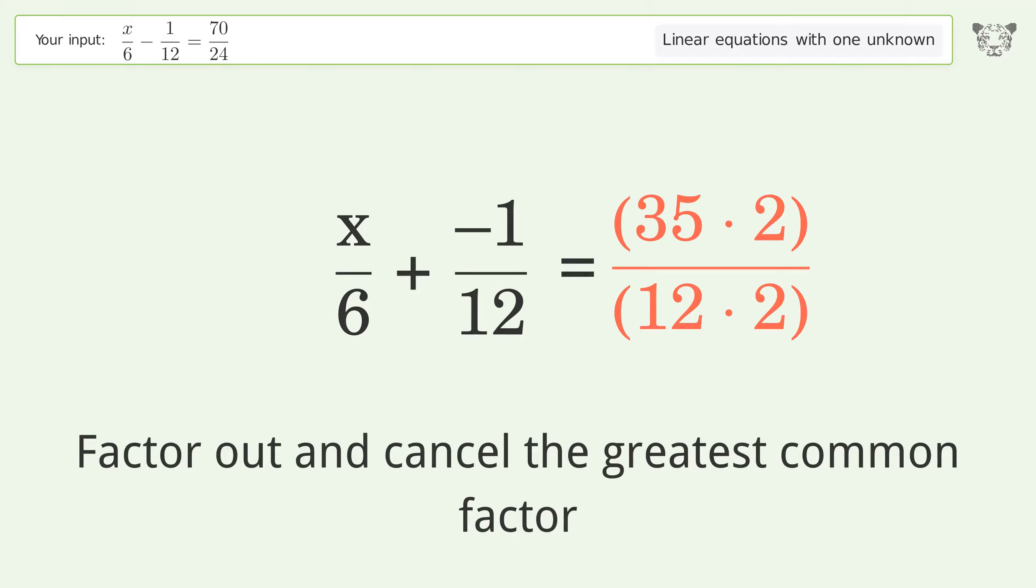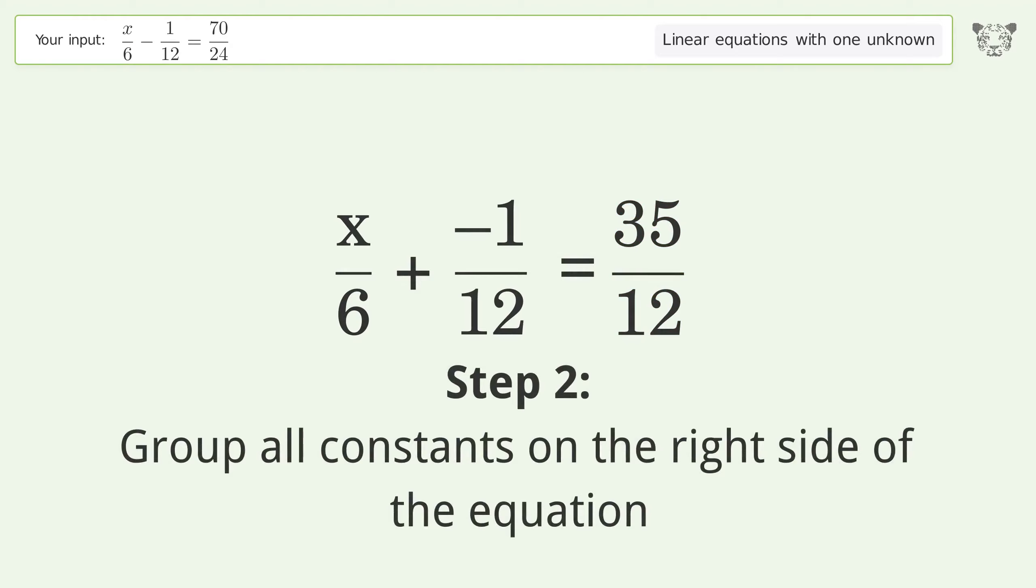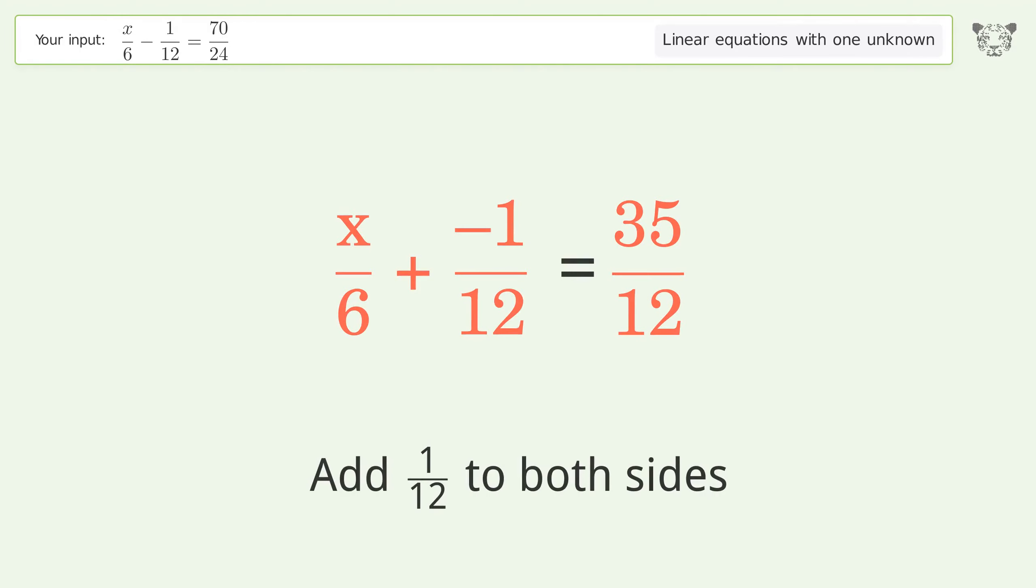Group all constants on the right side of the equation. Add 1 over 12 to both sides.